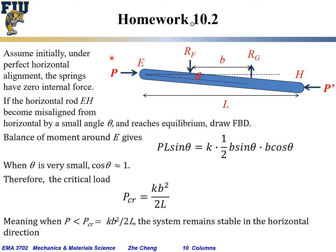The solution is similar to the previous problem. We assume initially, under perfect alignment, the two springs at F and G have zero internal forces — no tension or compression when perfectly aligned. Then let's say the horizontal rod EH rotates away from the horizontal position by a small angle theta, clockwise, and reaches equilibrium. We draw the free body diagram: at the E side we have P toward the right, at the H side we have P toward the left.